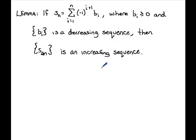At this point we introduce a lemma — a sub-theorem used to help prove the main result. The lemma states: if the nth partial sum S sub n is given by the summation from i equals one to n of negative one to the i plus one times b sub i, where the b sub i's are all non-negative and form a decreasing sequence, then the even-indexed nth partial sums form an increasing sequence. It may not be obvious why we need this yet, but it will definitely be clear by the end.